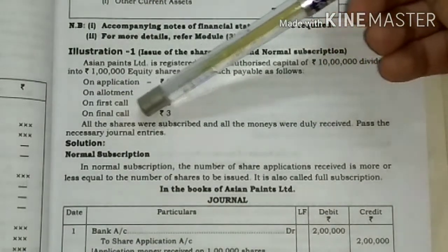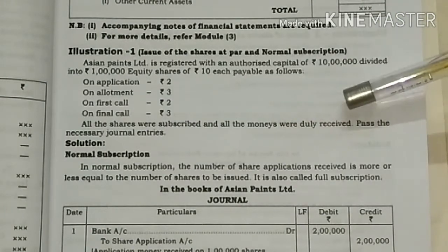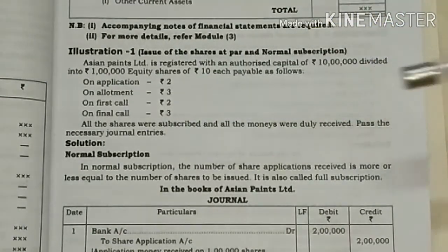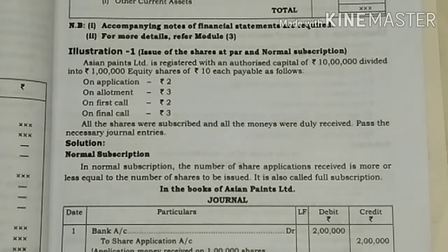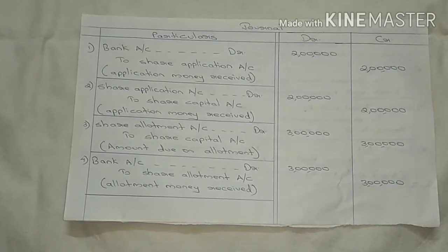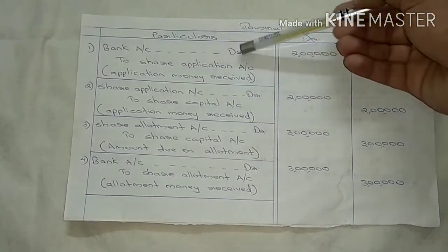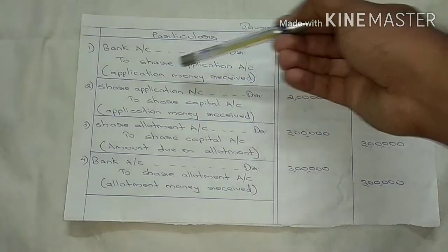All the shares were subscribed and all the money was duly received. Pass the necessary journal entries. I will take the first journal entry: Bank Account debited to Share Application Account. Narration: application money received.